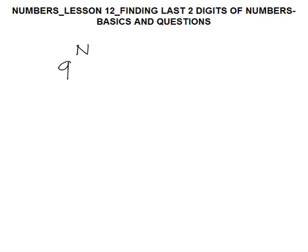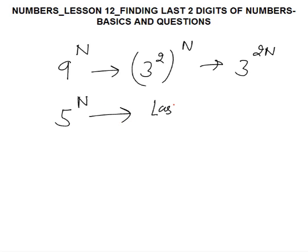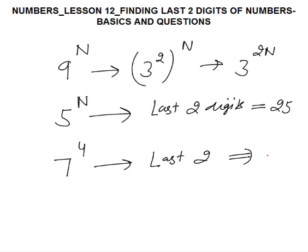For 9^n, convert it as (3^2)^n = 3^(2n), and use the method for powers of 3. For 5^n, the last two digits are always 25 — except for 5^1, which is simply 5. For 7^n, the key fact is 7^4 = 2401, so the last two digits of 7^4 are 01. We use this to calculate last two digits for any power of 7.